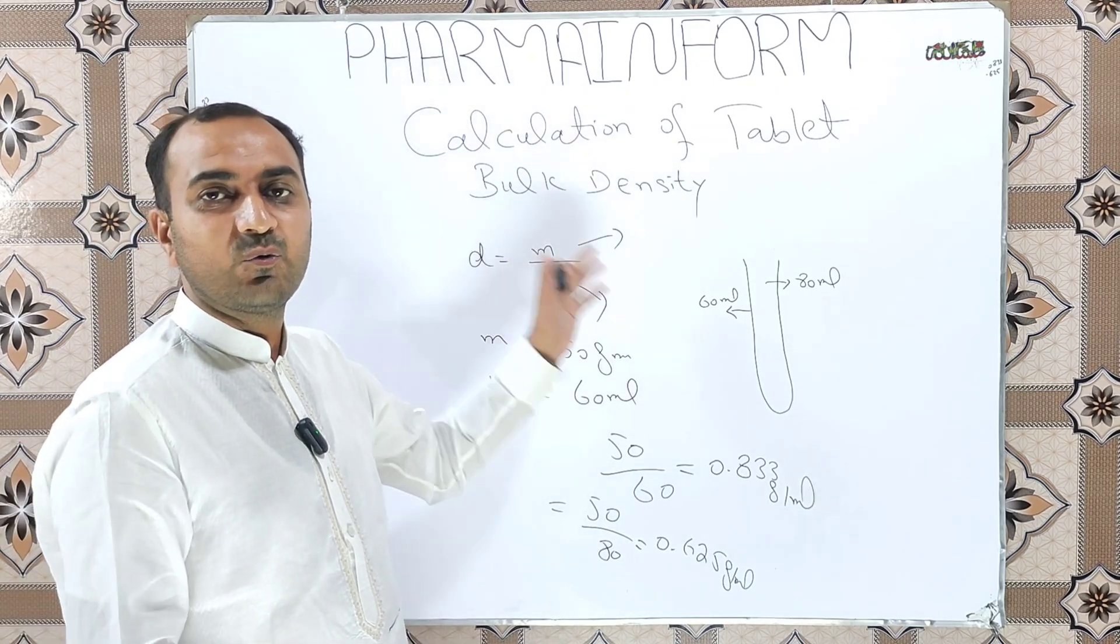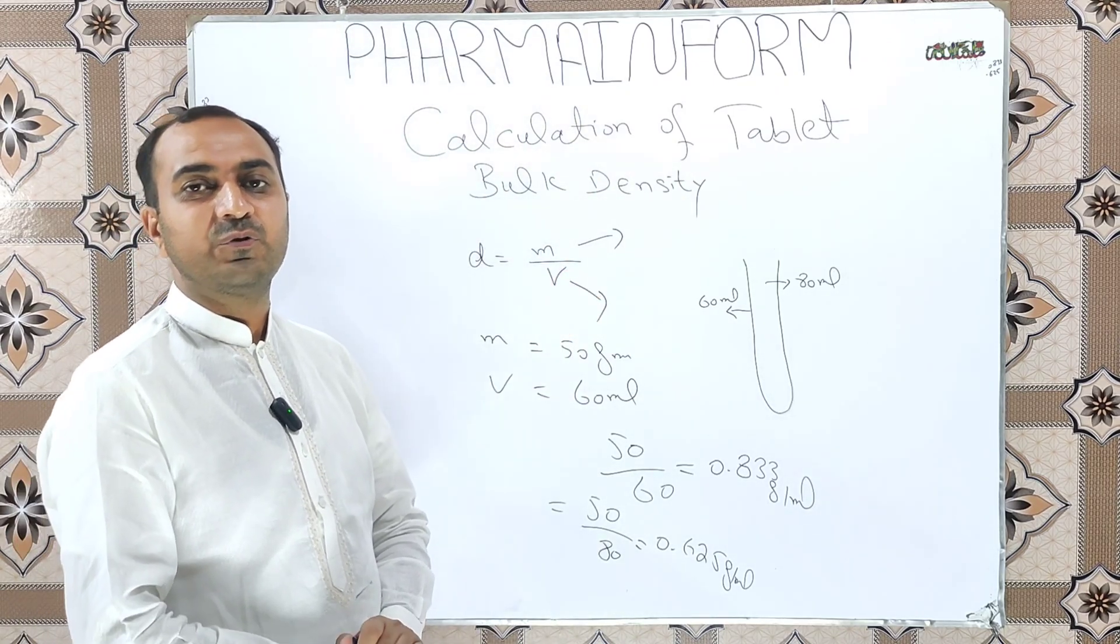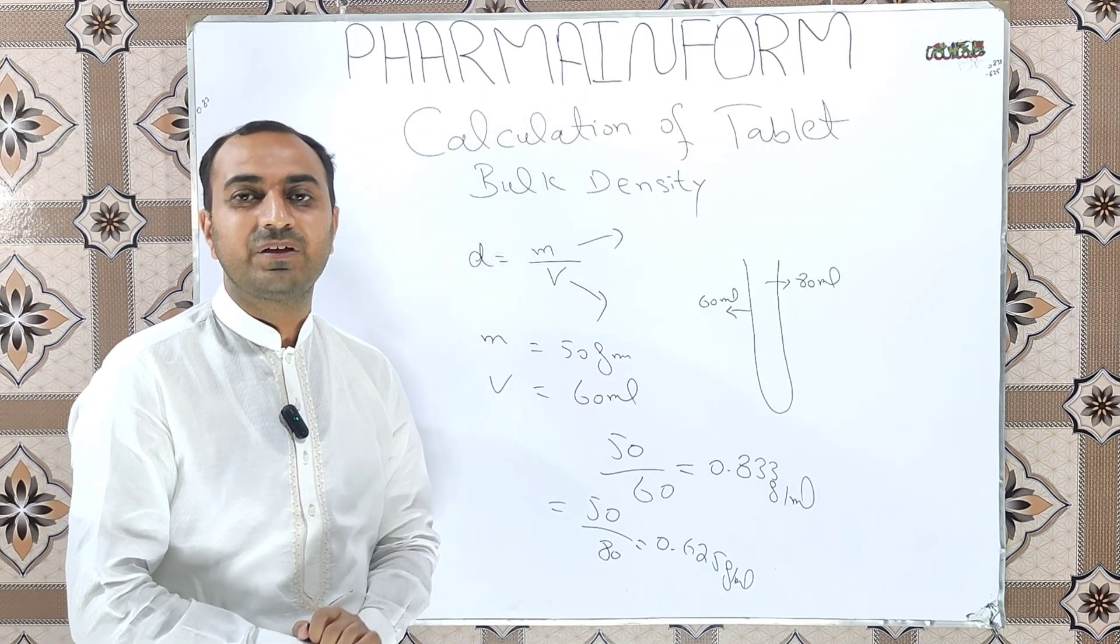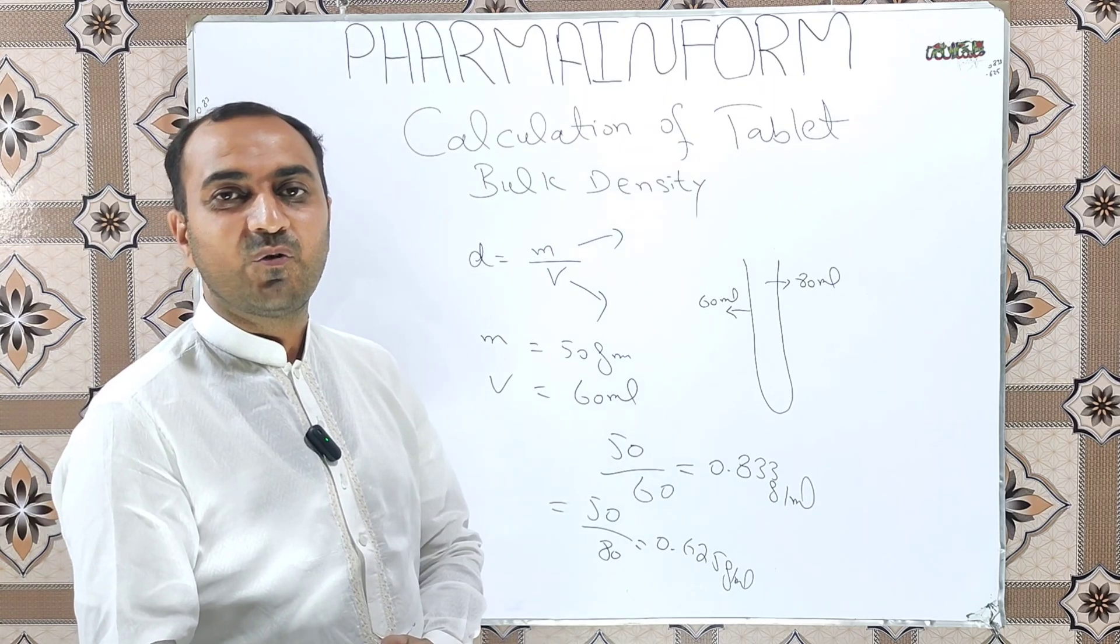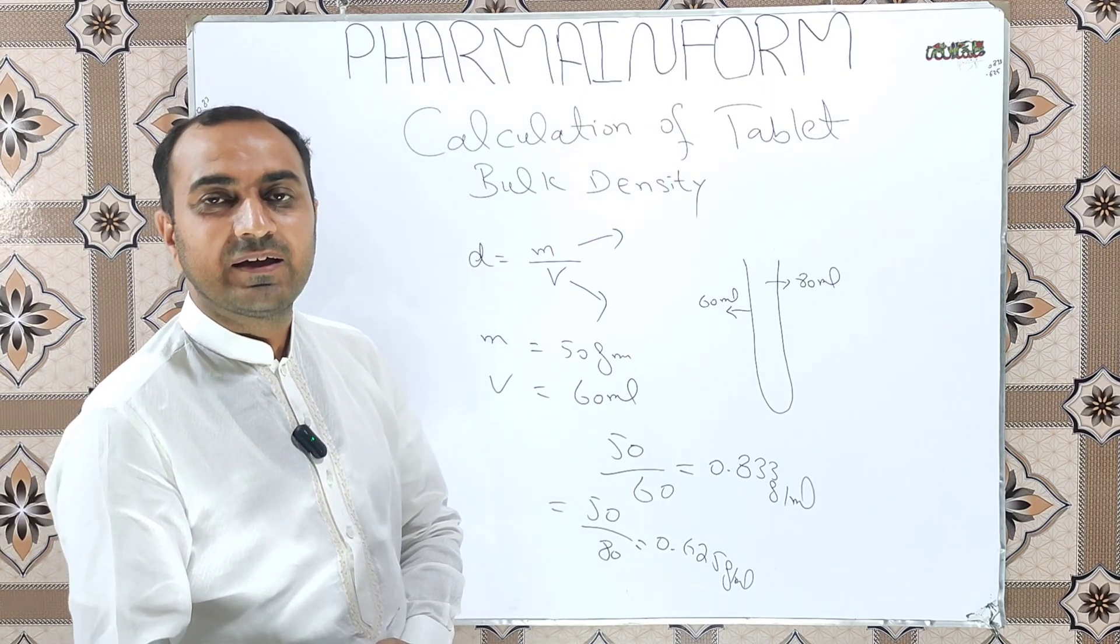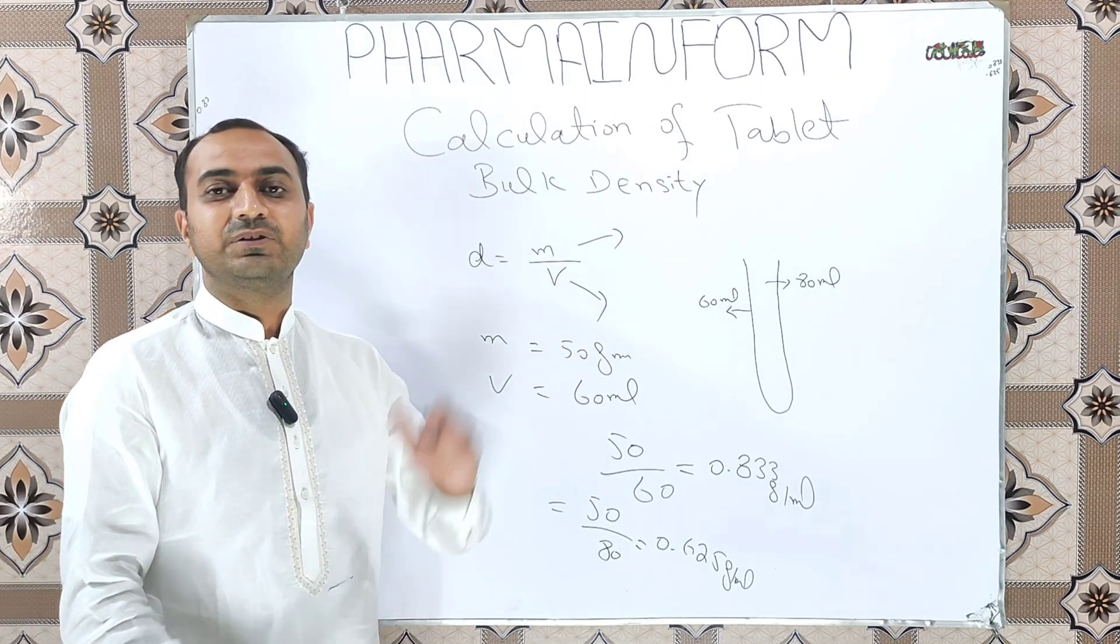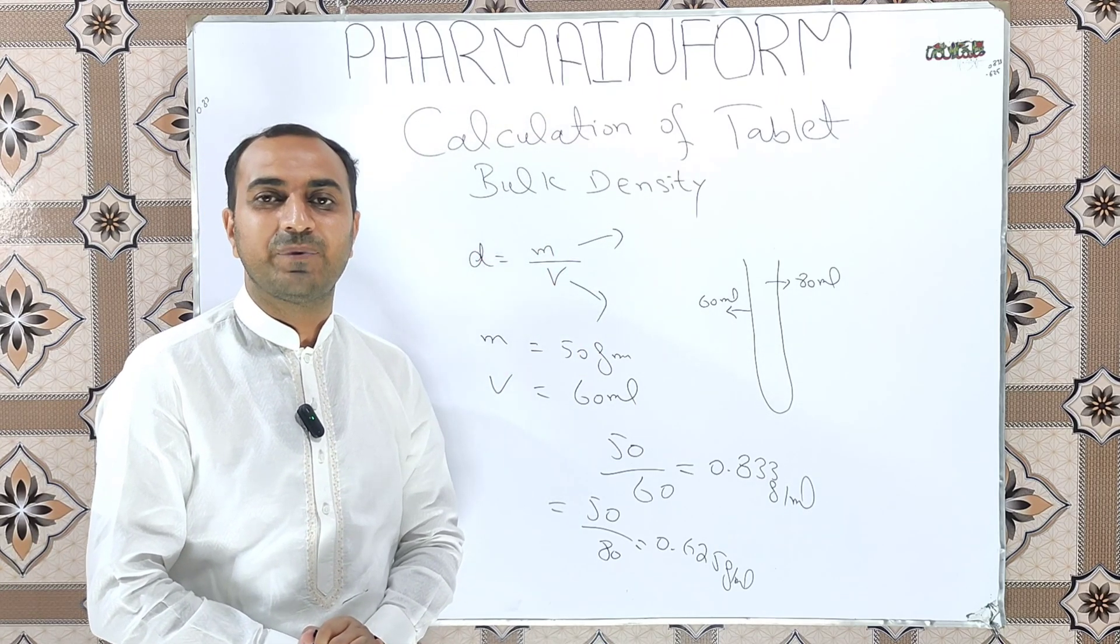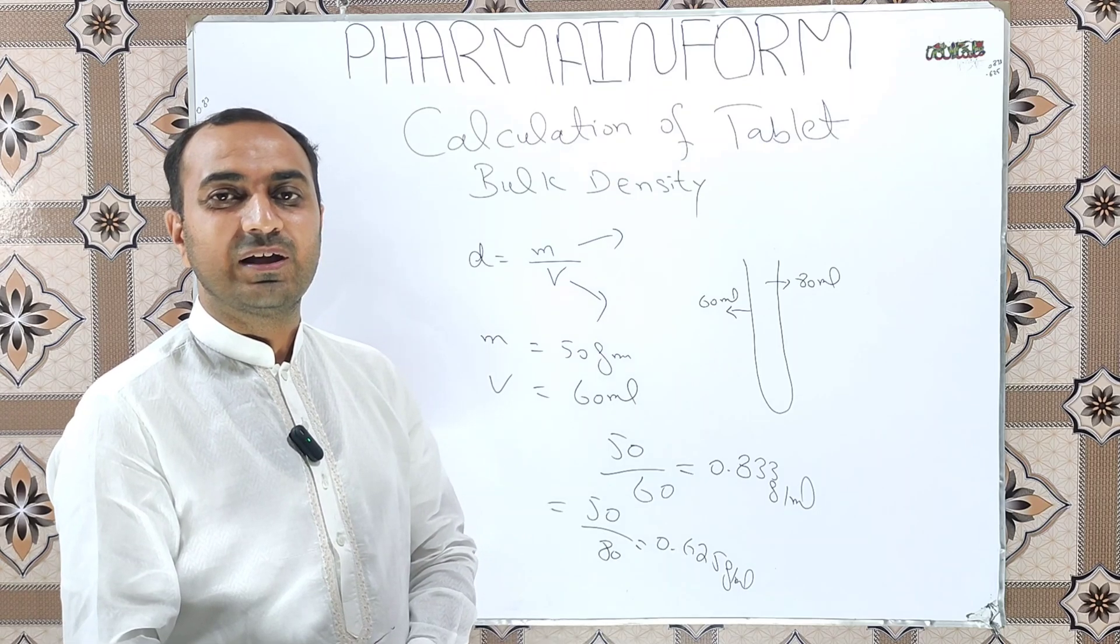So in this way you can calculate the bulk density of your tablets and then later on use this bulk density for the capacity calculation of the tablet coating pan. I hope you are now familiar with this calculation. If you like the video, share it to others and do subscribe my channel. Till the next video, Allah Hafiz.